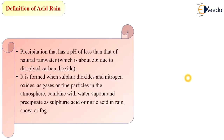Acid rain is formed when sulfur dioxide and nitrogen oxides as gases or fine particles in the atmosphere combine with water vapor and precipitate as sulfuric acid or nitric acid in rain, snow, or fog. When these gases react with water vapor or droplets, they are converted into acid rain, which then impacts the surrounding environment.